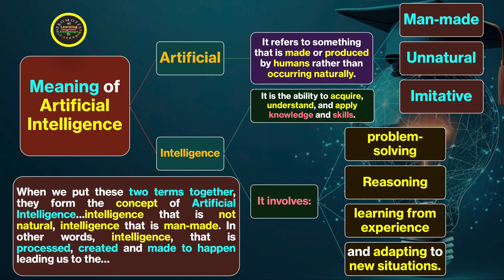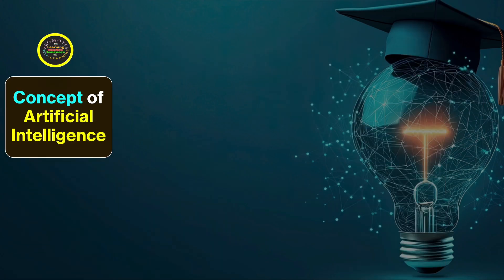When we put these two terms together, artificial and intelligence, they form the concept of artificial intelligence. Intelligence that is not natural, intelligence that is man-made - in other words, intelligence that is processed, created, and made to happen, leading us to the emerging idea and concept of artificial intelligence.